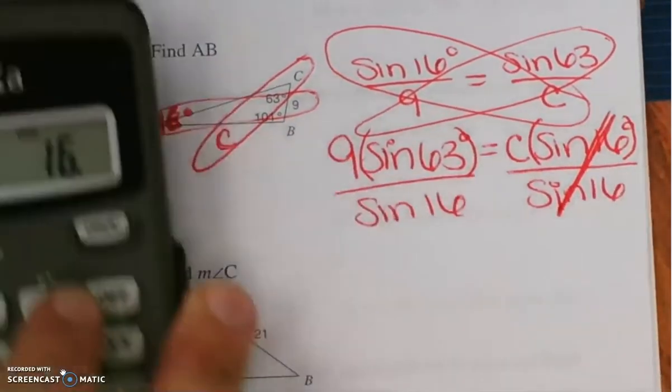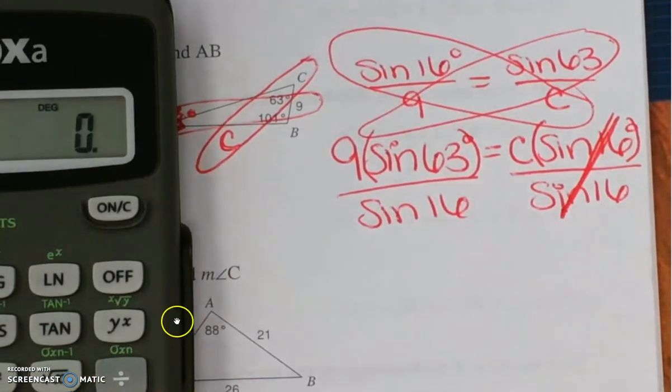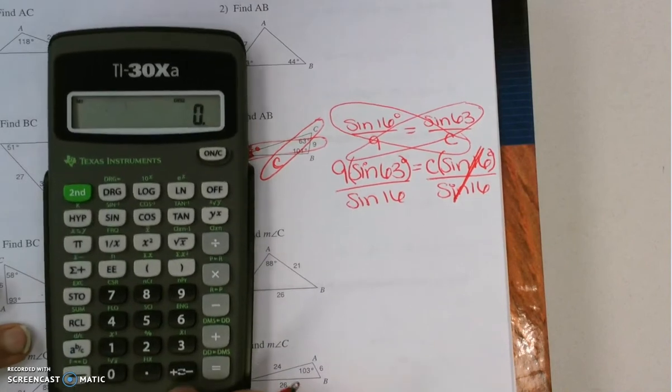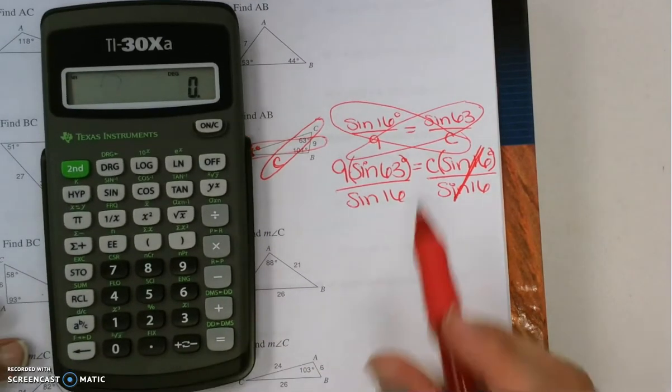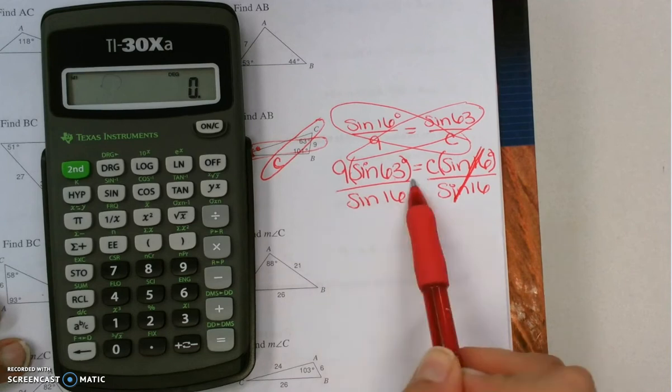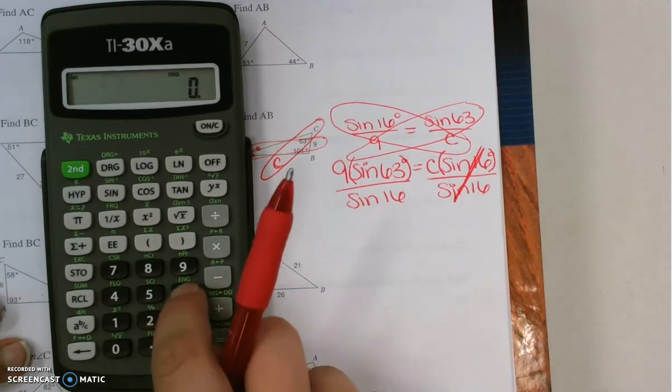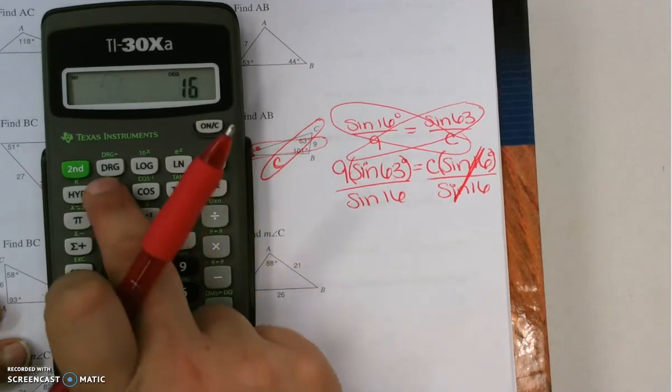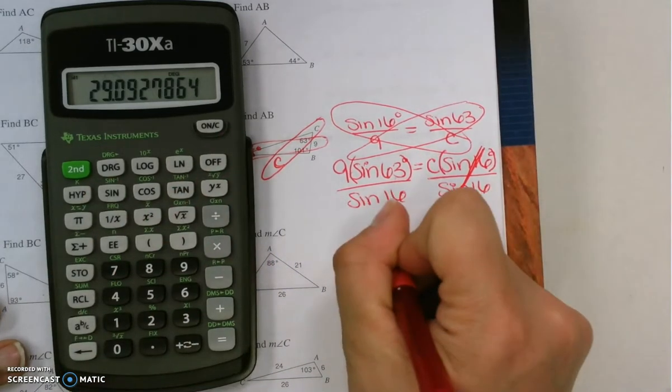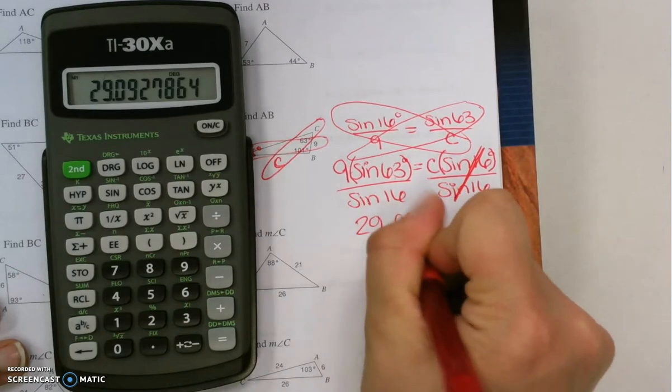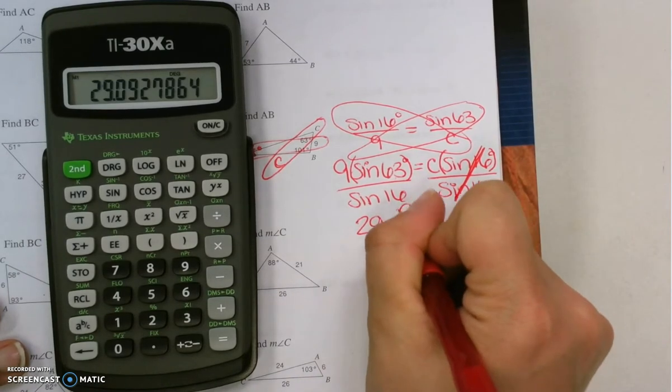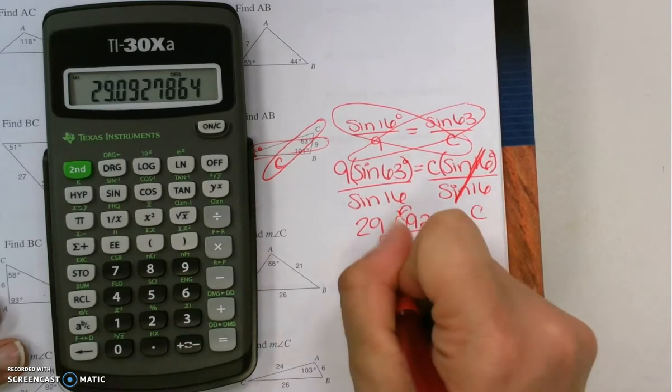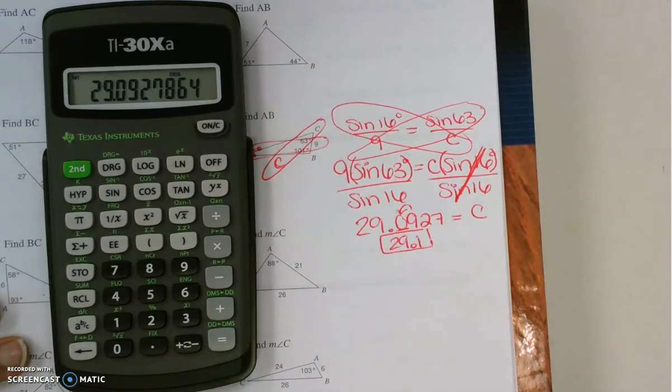And now I pick up my calculator. Let me zoom this out a little bit so you guys can see the calculations. So 63 sine times 9 equals divided by 16 sine equals. And we're going to get that C is 29.0927. Round it to the nearest tenth. 29.1. C is 29.1.